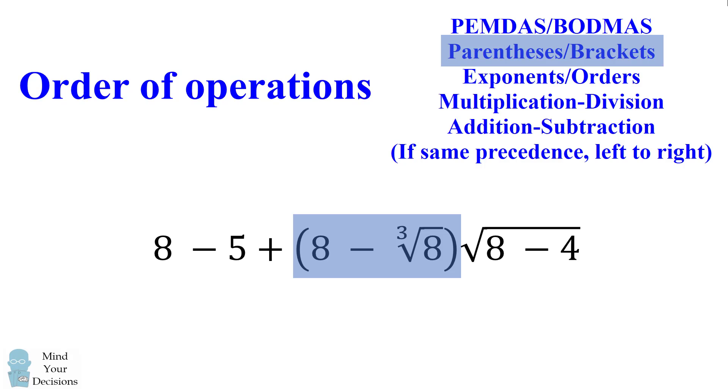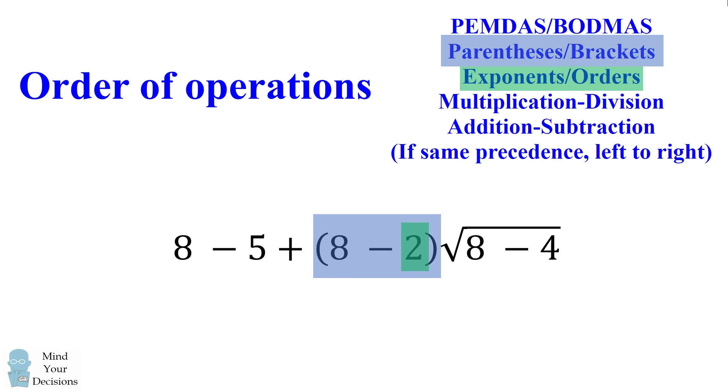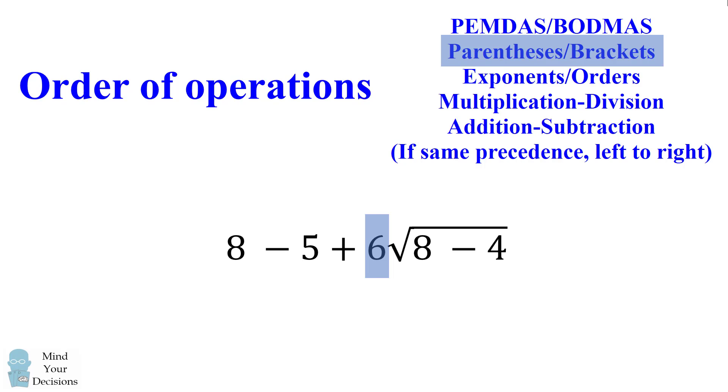We'll now evaluate the other parenthetical expression. In this one, we also have a cube root, which we need to evaluate first. The cube root of 8 is equal to 2. We now have 8 minus 2, which is equal to 6.